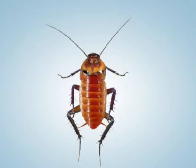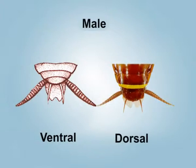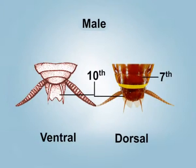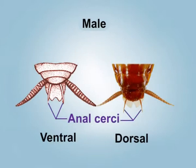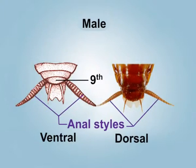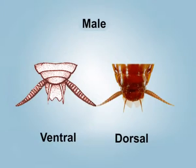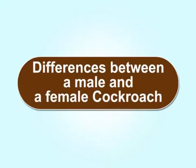In the male cockroach, the eighth tergum is overlapped by the seventh tergum. The tenth tergum is bilobed, and below it there is a pair of short filaments called anal cerci. Ventrally, the ninth sternum is visible and bears a pair of anal styles. The genital aperture is found between the ninth and tenth sternum, and the anus is found beneath the tenth tergum. A female cockroach also possesses the same features, except for certain differences.